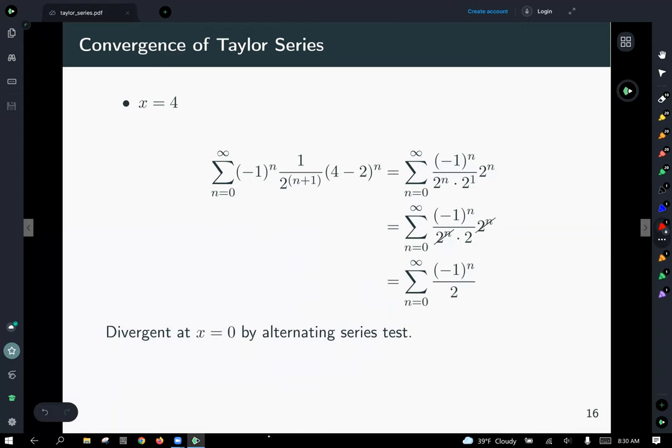At the other endpoint, when x equals 4, you got 4 minus 2 becomes 2n, and then straight away you can reduce away those, and we have kind of an alternating version of the series that we just looked at, which fails the alternating series test because the limit doesn't go to 0 as well.